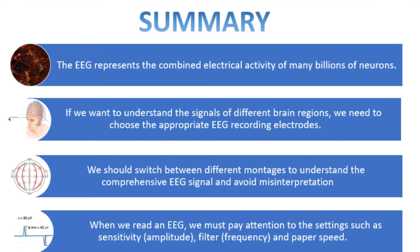In summary, EEG represents the combined electrical activity of many billions of neurons. To understand signals from different brain regions, we need to choose appropriate recording electrodes and settings. We should switch between different montages to understand comprehensive EEG signals and avoid misinterpretation. When reading EEG, always pay attention to settings such as sensitivity, filter, and paper speed. Thanks for listening — enjoy your EEG reading.